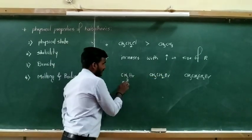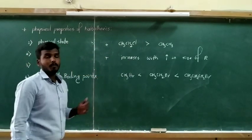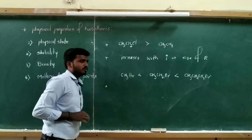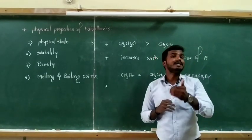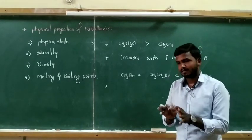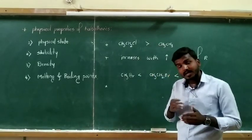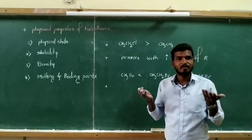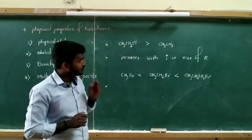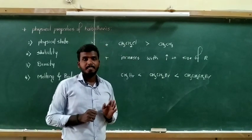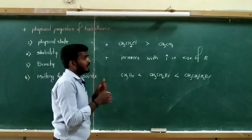Therefore, among these halides, methyl bromide has less melting and boiling points compared to ethyl bromide, which has less than propyl bromide. The reason for this is that as the size of the alkyl group increases, the surface area increases. If the surface area increases, the melting and boiling point of the compound also increases. So the main reason for the increase in melting and boiling point of haloalkanes with increase in alkyl group size is the increase in surface area of the alkyl group.